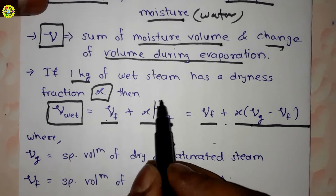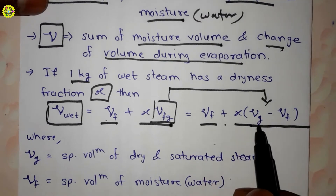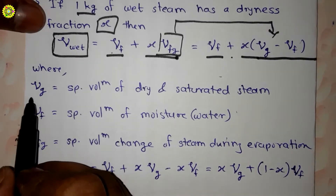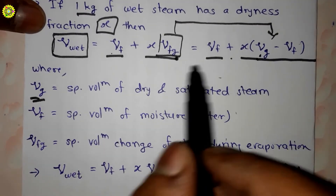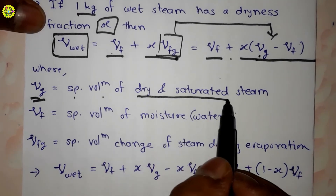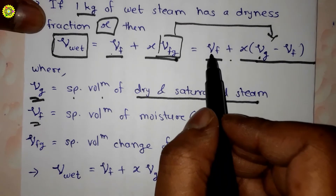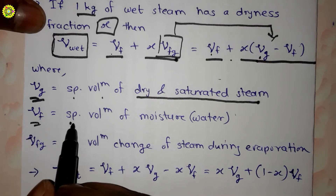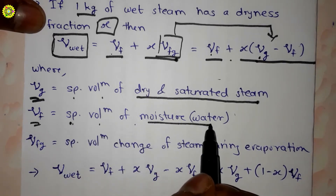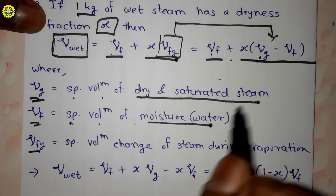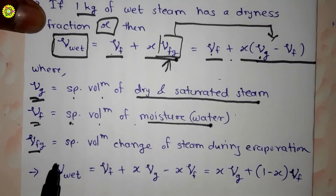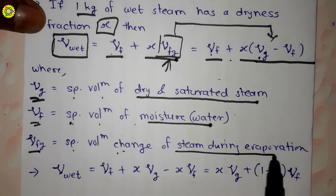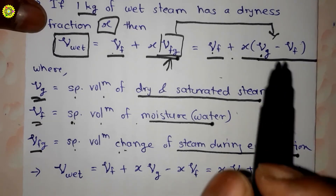Here vfg is simplified as vg minus vf. vg is the specific volume of dry and saturated steam. vf is the specific volume of moisture, that is water. And vfg is the specific volume change of steam during evaporation.